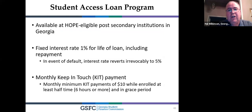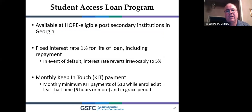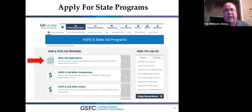Georgia also has the Student Access Loan for all schools in Georgia — similar to the Parent PLUS Loan, it helps fill in the gap. You apply after filling out your FAFSA. It's at 1% interest and $10 a month. Use it only if you need it.